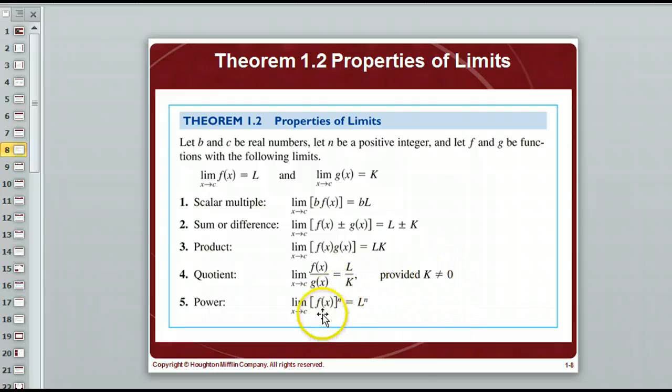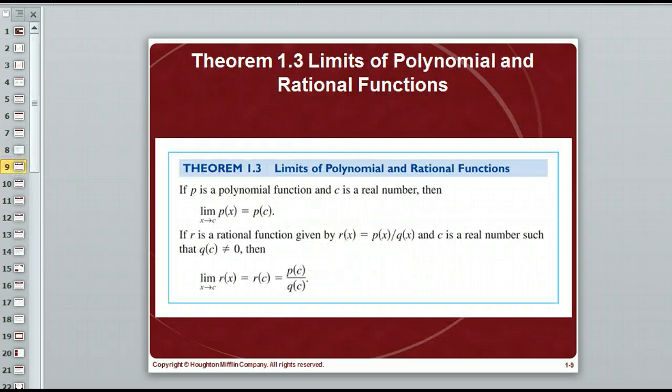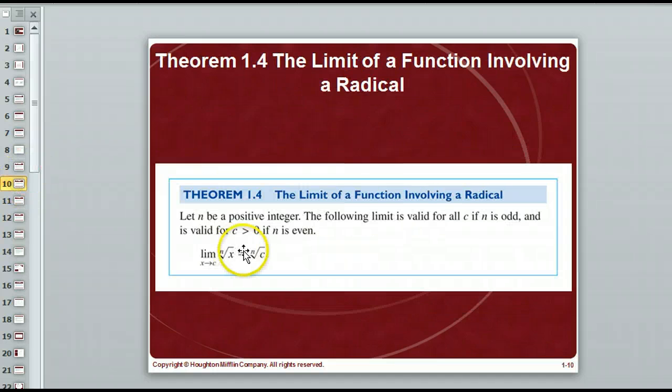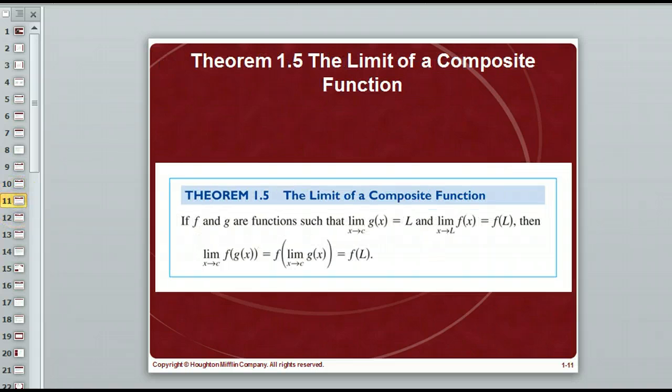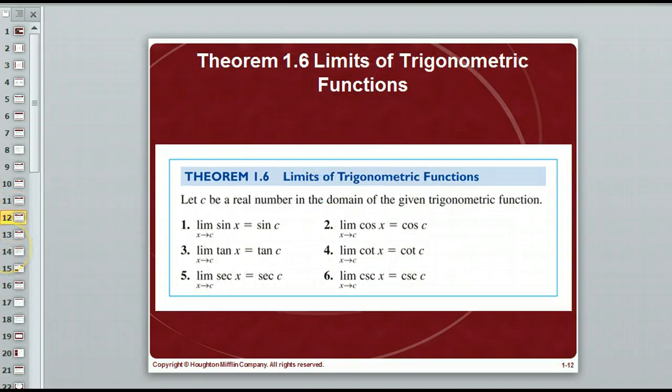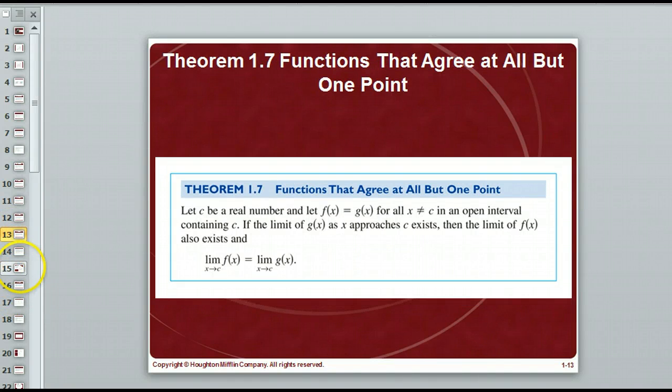And then if we have something raised to a power, we're going to get the limit raised to the power. You can go through all these, they're pretty much the same. If I have a rational function, I plug in c, making sure the denominator is not equal to zero. Direct substitution. This is a composition of functions, but it's direct substitution on a composition of functions. If we have our trig values, same thing. Just direct substitution, plug it in.